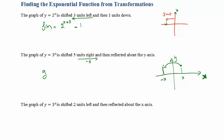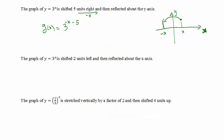So the new function g(x): because it's reflecting about the y-axis, x becomes negative x, and also subtracting 5 because of the shift 5 units to the right. So g(x) = 3^(-x - 5). The minus 5 accounts for the right shift and the negative x accounts for the reflection about the y-axis.